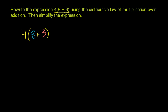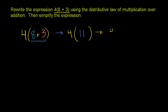Now there are two ways to do it. Normally when you have parentheses, your inclination is to evaluate what's in the parentheses first, and then worry about what's outside. We can do that fairly easily here. We can evaluate what 8 plus 3 is — 8 plus 3 is 11. So we get 4 times 11, and 4 times 11 is just 44.